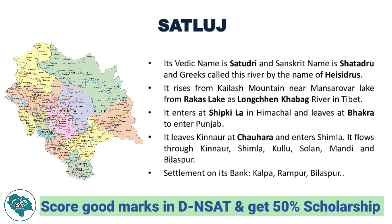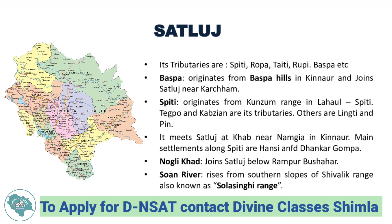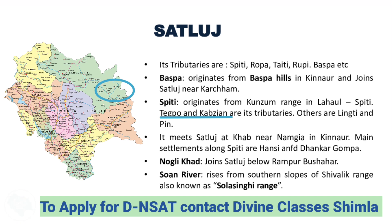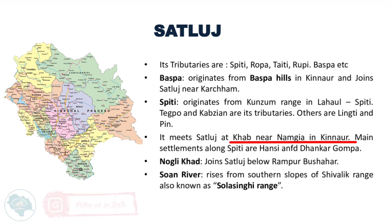Important towns on the banks of Satlaj include Namgiya, Kalpa, Rampur, and Bilaspur. Its tributaries are Spiti, Ropa, Taithi, Rupi, Baspa, etc. Baspa originates from Baspa hill in Kinnaur and joins Satlaj near Karcham. Spiti originates from the Kunzum range in Lahul Spiti; its important tributaries are Tekpo, Kabzian, Lingti, and Pin. Spiti meets Satlaj at Khab near Namgiya in Kinnaur. Main settlements along Spiti are Hansi and Dhankar Gompa.